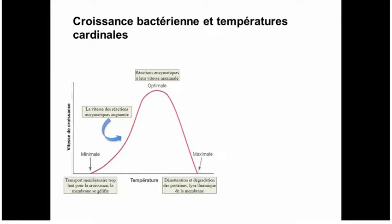Membrane lipid biochemistry is adapted for growth at the optimal temperature. At lower temperatures the membrane lipids are too rigid, preventing membrane transport and porin function. At higher temperatures, all the enzymes in the bacterial cell — made of proteins — will begin to denature and won't function anymore, just like boiling an egg.